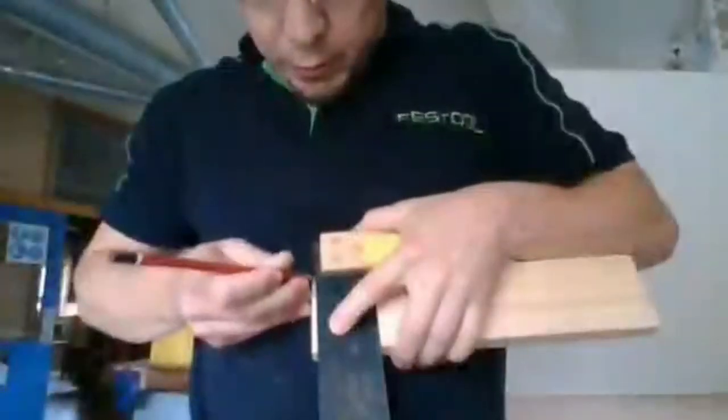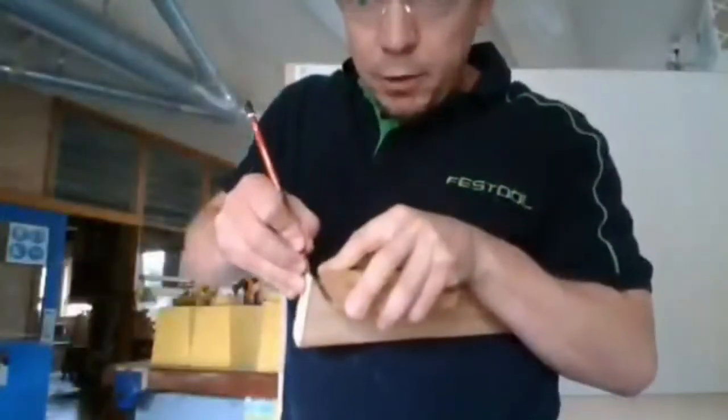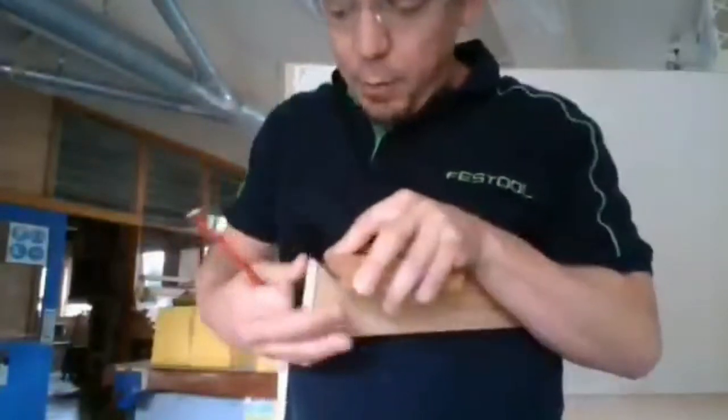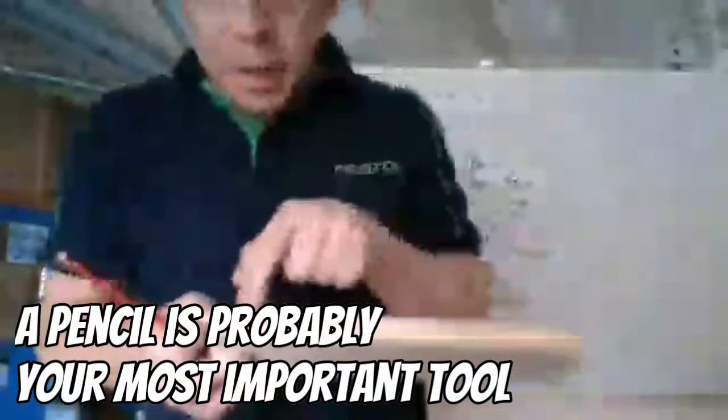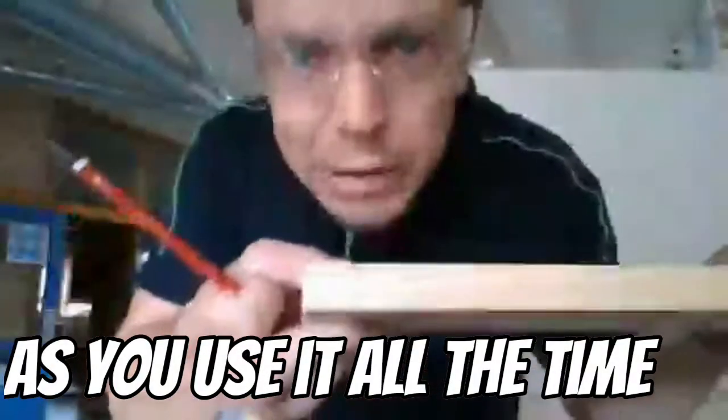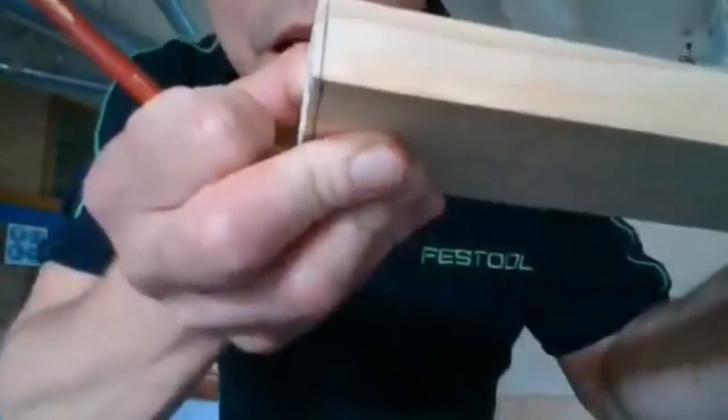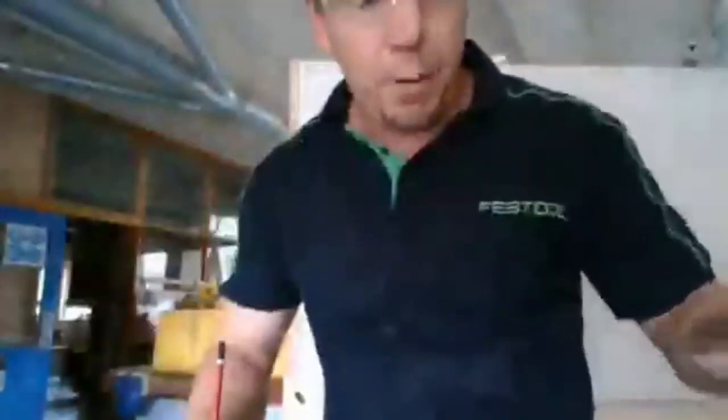First up we need to check that our edges squared off, so let's just line that up there. All right, nice and square. We can square it across the top as well. Let's get a little pencil line, don't normally do this in mid-air. So from the top there's my 90 degree line.